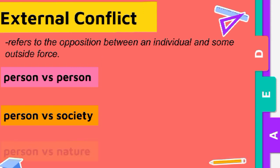Next is person vs. nature. This could involve a weather event, an animal encounter, or a natural disaster. For example, as seen in the movie 2012.